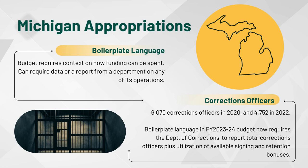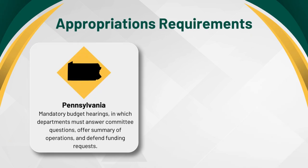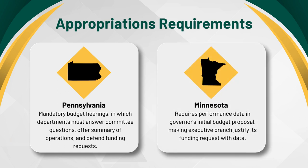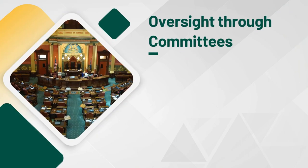Information from reporting like this can help influence the budget process and legislation. For example, there was a recently introduced bipartisan bill to allow corrections officers to opt in to the same pension options available to Michigan state troopers. Pennsylvania has mandatory budget hearings for departments to face a legislative committee, offer a summary of department operations, and to defend the funding requests for the upcoming fiscal year. Minnesota requires agency and program performance data in the governor's initial budget proposal, making the executive branch justify its funding request with data.